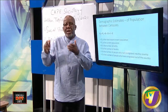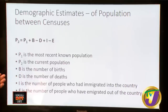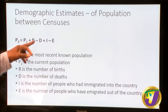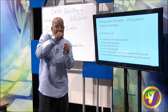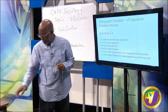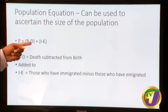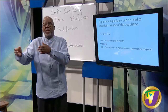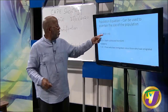The population equation: population equals births minus deaths, plus immigration minus emigration. So we have births and deaths, but there are also people who immigrate into our country and people who emigrate to other countries. It is important that you understand and be able to define immigration differently from emigration.